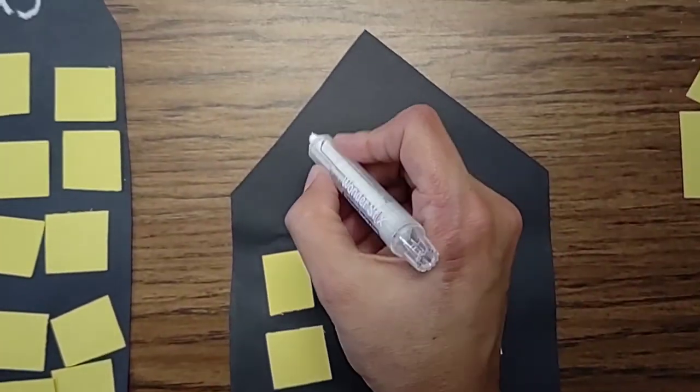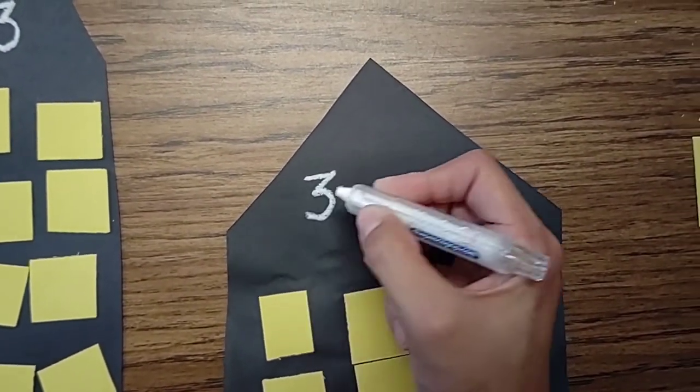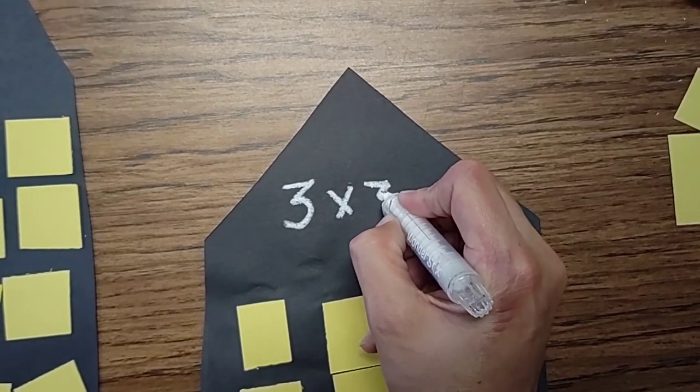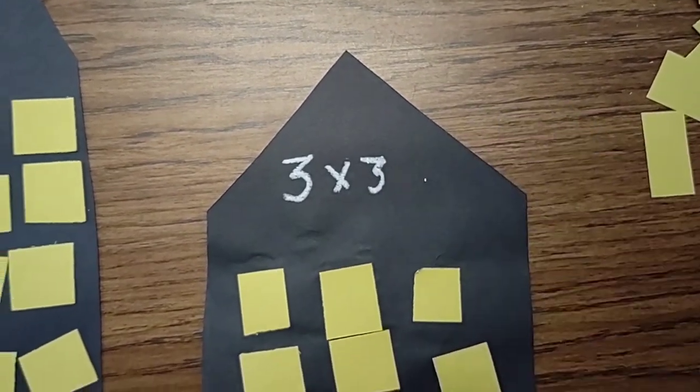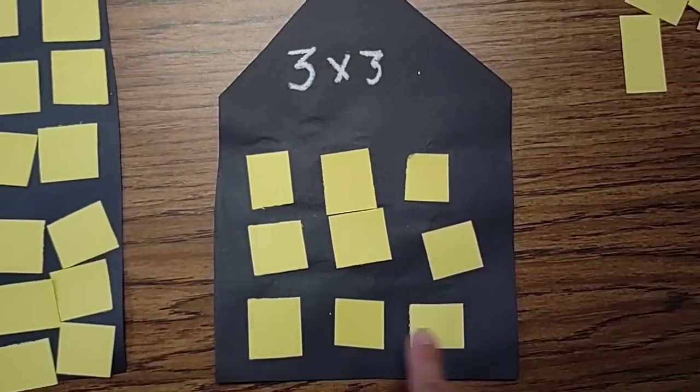And we would solve that. Three rows with three in each. Count by threes. Three, six, nine.